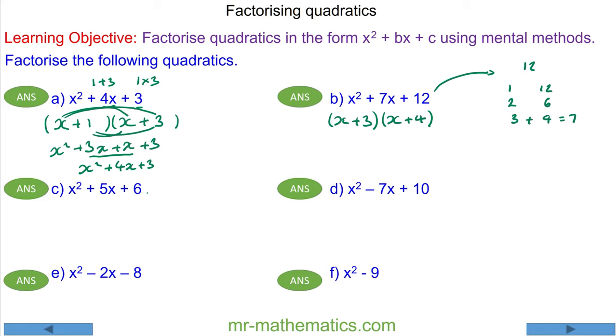For question C, we need two numbers that multiply to make 6 but add to make 5. 1 add 6 is 7, but 2 add 3 does make 5. So in our brackets we've got x plus 2 and x plus 3.